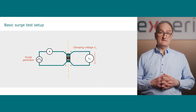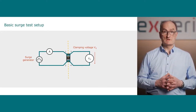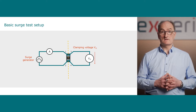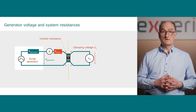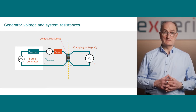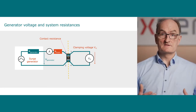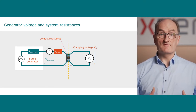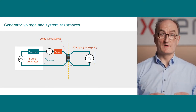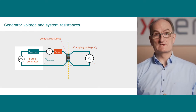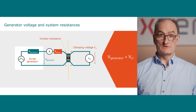A typical test setup consists of a surge generator and recording means of the surge current and clamping voltage. Looking into a typical surge generator, there is an internal generator resistor, typical in the 2 ohm range. Since the connection leads have an additional trace resistance and contacting the device under test will introduce resistance as well, the generator voltage is not the same as the clamping voltage.